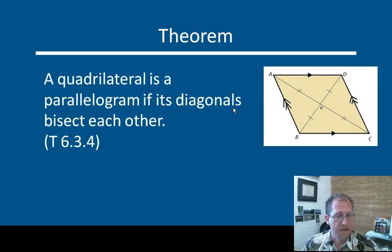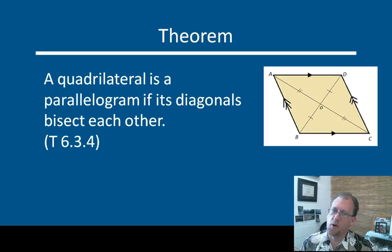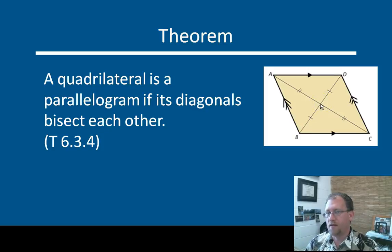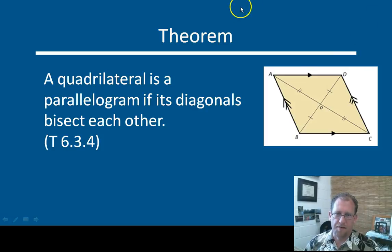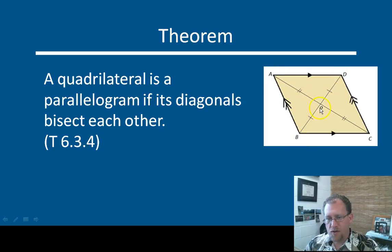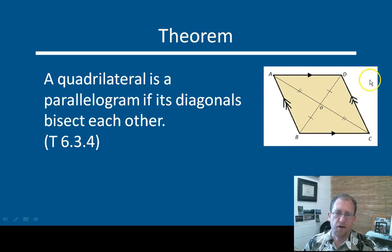A quadrilateral is a parallelogram if its diagonals bisect each other. Now I misspoke in the last two lectures — I thought that it was true that in a parallelogram the diagonals always meet at a right angle. I've since discovered that that was wrong, so I'm sorry about that. That's a rhombus. The diagonals of a parallelogram always bisect each other, but that's all that we can say about them. So if you can demonstrate that OD and OB are congruent and that AO and OC are congruent, then you have also demonstrated that this is a parallelogram.